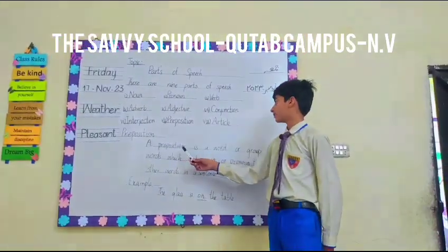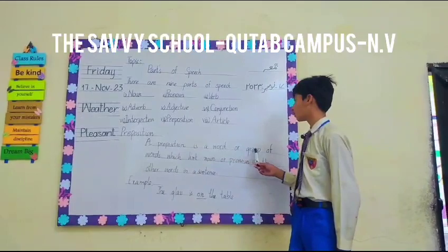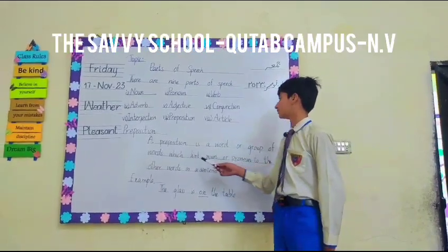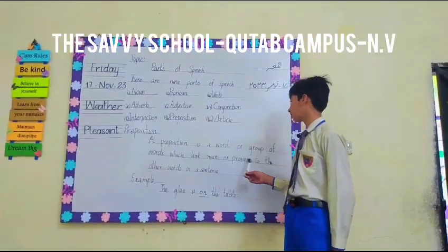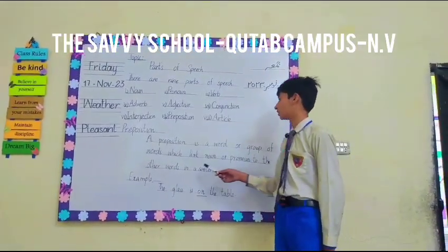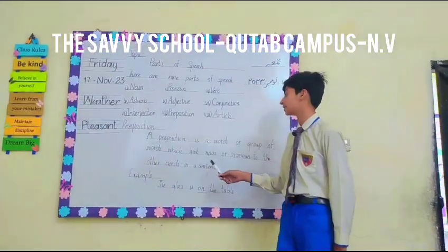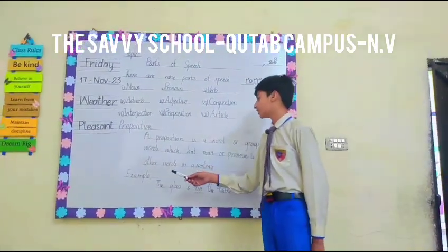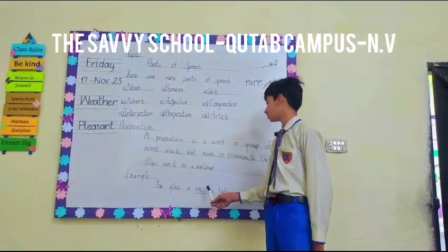Preposition. A preposition is a word or group of words which links a noun or pronoun to another word in a sentence. For example: 'The glass is on the table.' Here, 'on' is the preposition.